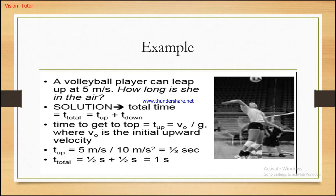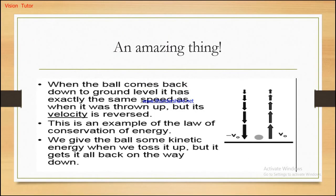Here is an example: a volleyball player can leap up at 5 m/s. How long is she in the air? Time up = initial velocity / g = 5 / 10 = 0.5 seconds. Total time = 2 × 0.5 = 1 second. So the total time in the air is 1 second.